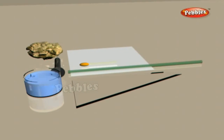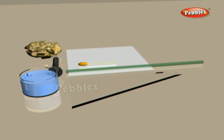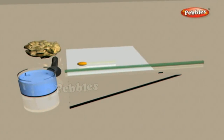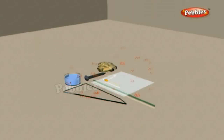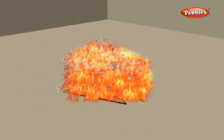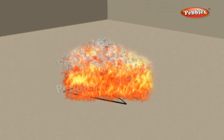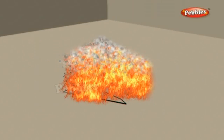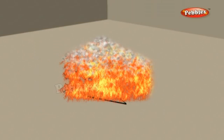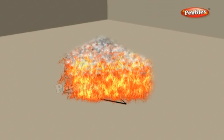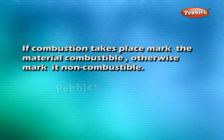When a combustible substance comes into contact with fire, it burns — they are combustible. Try to do the same with a spoon or a glass piece — these are non-combustible. Substances which burn when brought into contact with fire are called combustible; those which do not burn are called non-combustible.